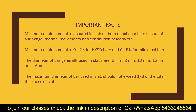The minimum reinforcement is ensured in slabs in both directions to take care of shrinkage, thermal movement, and distribution of loads. This is why we must meet the minimum reinforcement — you cannot go below 0.12 percent of the total cross-sectional area, because going below that can cause issues with shrinkage, thermal movement, and load distribution.